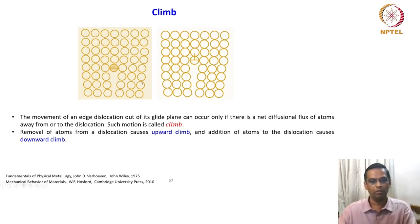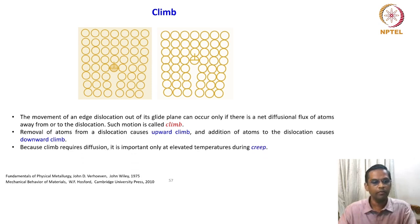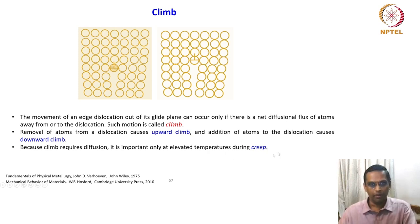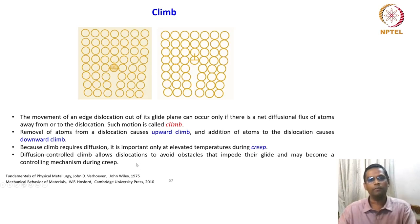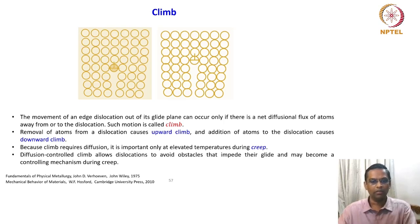A very important point is that because climb requires diffusion, it is important only at elevated temperature during creep. This particular mechanism of dislocation climb is quite relevant to creep. When we discuss creep mechanisms, we will use this terminology. Diffusion-controlled climb allows dislocations to avoid obstacles that impede their glide and may become a controlling mechanism during creep.